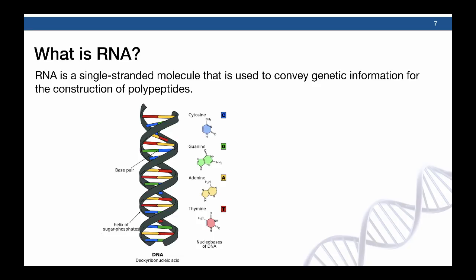A reasonable question is: what is RNA? RNA is a single-stranded molecule that is used to convey the genetic information for the construction of polypeptides, which eventually fold into proteins. It's easiest to understand what RNA is by first comparing it to DNA.